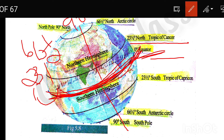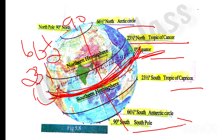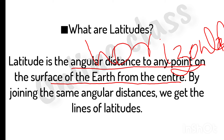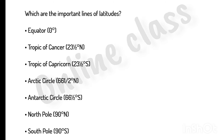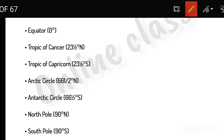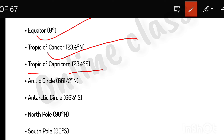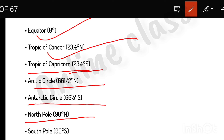The equator — Tropic of Cancer, Arctic Circle, North Pole, Tropic of Capricorn, Antarctic Circle. Here we are going to show the important lines of latitude: Equator is 0 degrees, Tropic of Cancer is 23.5 degrees North, Tropic of Capricorn, Arctic Circle, Antarctic Circle, North Pole, South Pole.